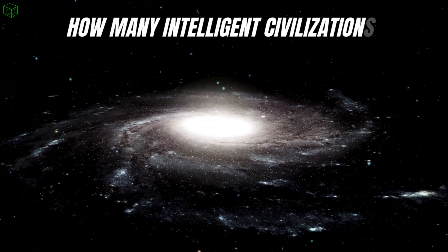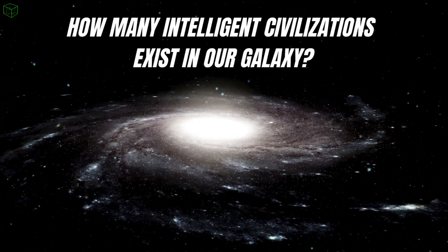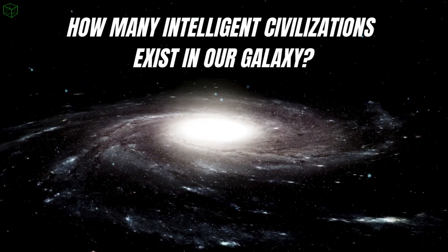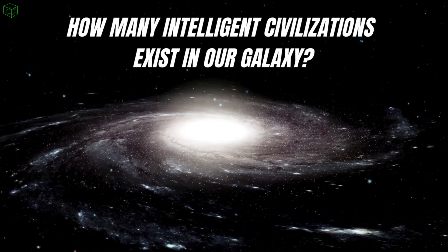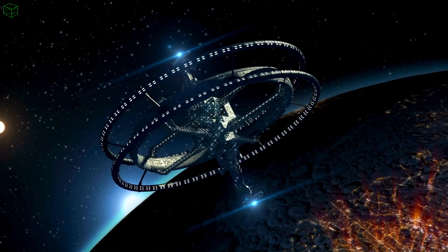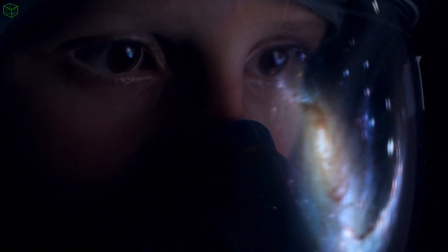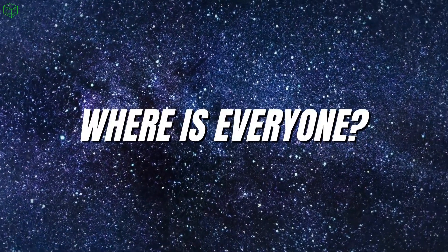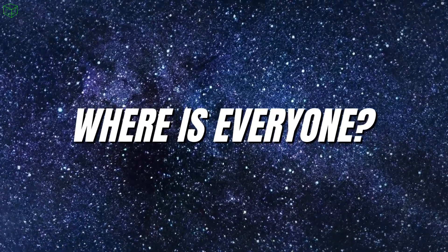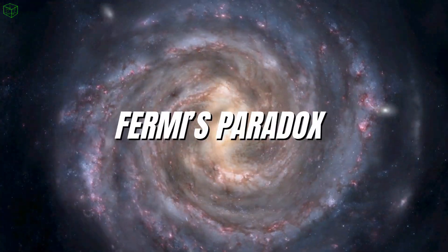The question Fermi had just calculated in his mind was as follows: how many intelligent civilizations exist in our galaxy? His conclusion was that there should be so many civilizations that we should have observed some already, so the lingering question was, where is everyone? This is Fermi's paradox.